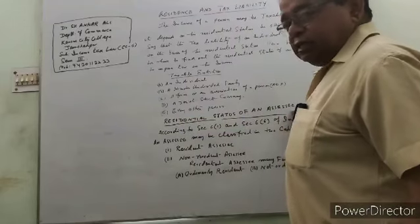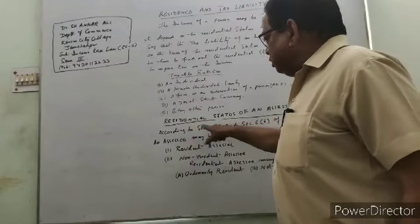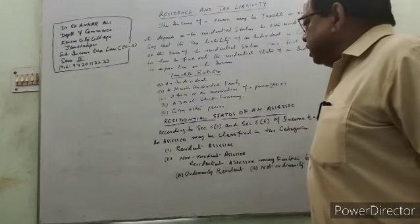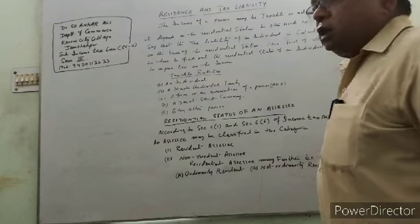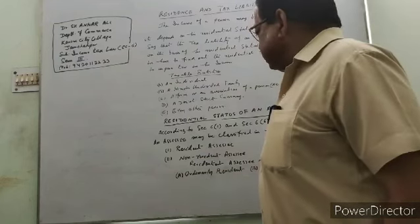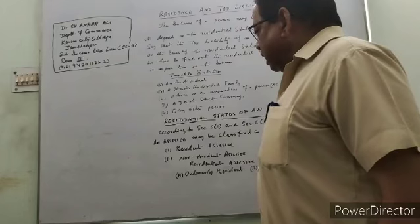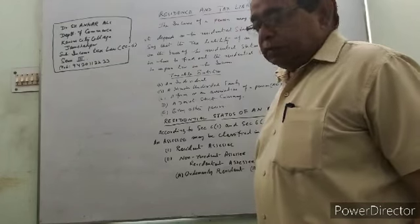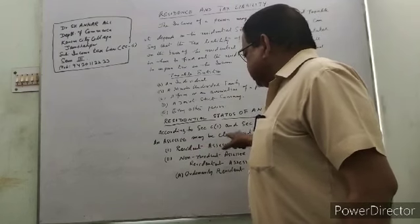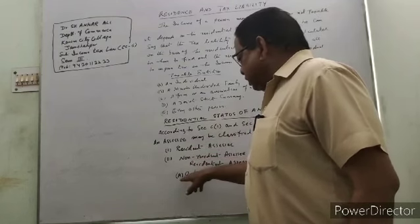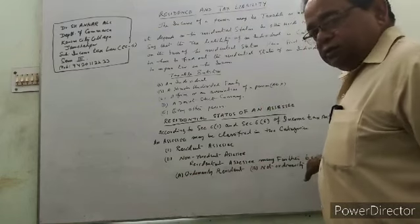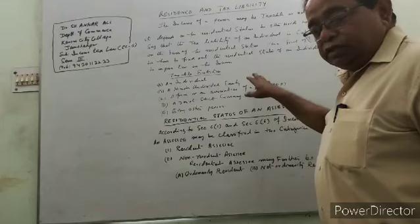Regarding the residential status of an assessee, according to Section 6(1) and 6(6) of the income tax act, an assessee may be classified into two categories: number one, resident assessee, and number two, non-resident assessee. And further, the resident assessee has been divided into two categories: ordinary resident and not-ordinarily resident.